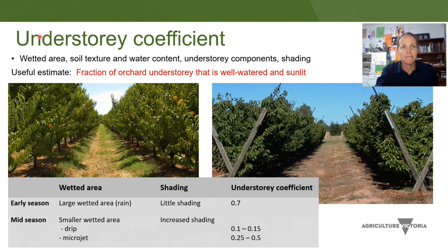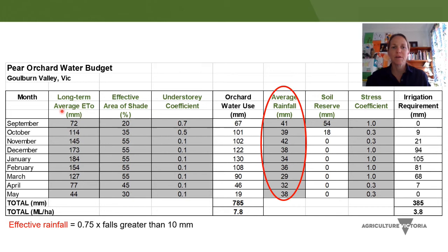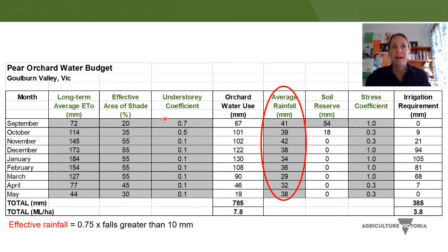To recap: we have the long-term ETO — the water use of grass — plus the effective area of shade and the understory coefficient, with these two columns converting the long-term ETO to your orchard water use. In this example, I have an orchard that reaches an EAS of 55%, and you'll notice the last couple of entries drop that value back as we reach the end of the season and leaf function starts to decline. For the understory, I started at 0.7 at the beginning of the season, then dropped it back — and evidently I'm using drip because I'm using 0.1 for the remainder of the season.